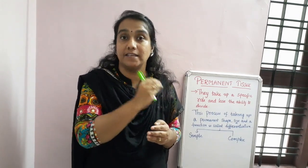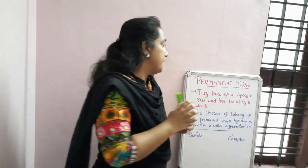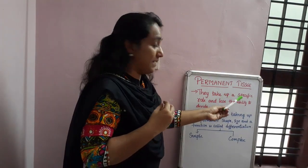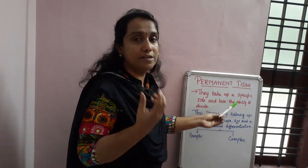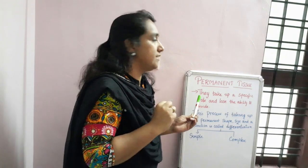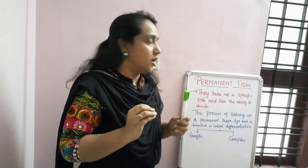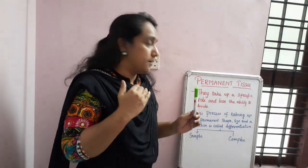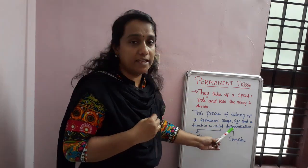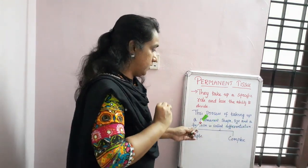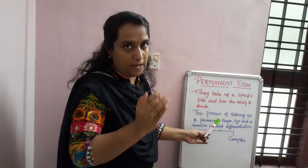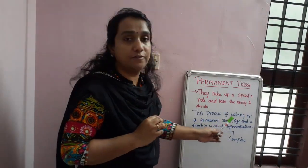So permanent tissue: after some time, these cells take up a specific role and lose their ability to divide. They stop division and take on a specific role. That type of tissue is known as permanent tissue. This process — the process of taking up a permanent shape, size, and function — is known as differentiation.